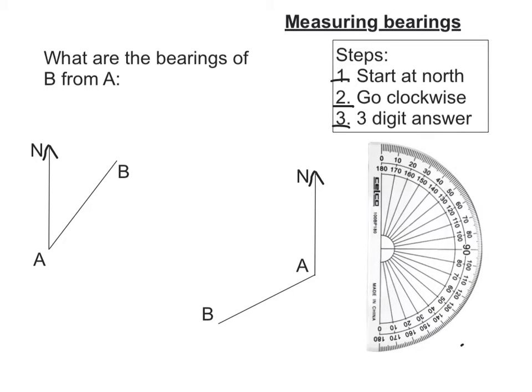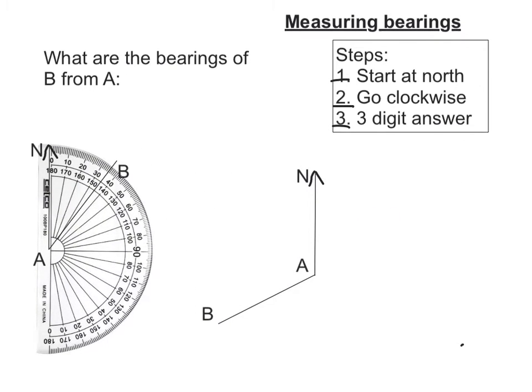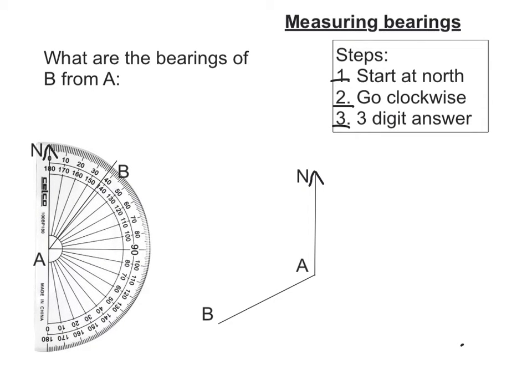So bearings of B from A. A is where we start at and the north line has already been drawn. So let's put our protractor up against it, put A in the middle and make sure that our zero is on the north line. Then we're going to go clockwise until we get to B. So we've got to B. B is about here.